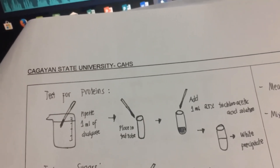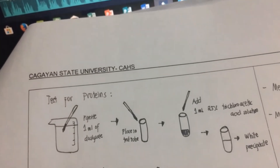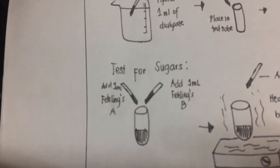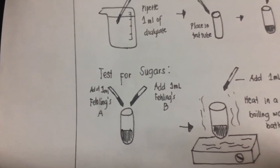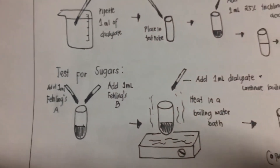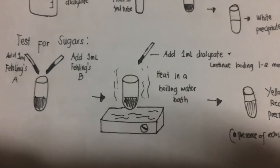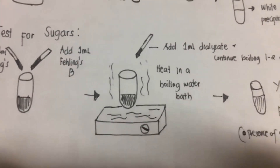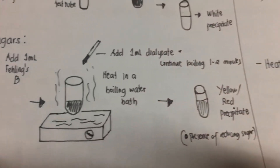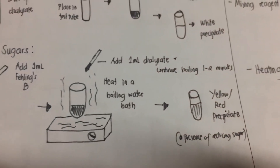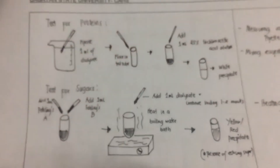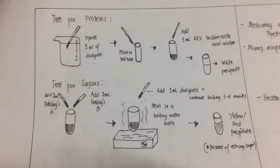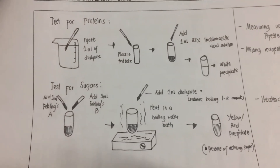Now let us test for sugar. Combine 1 ml of Fehling's A and 1 ml of Fehling's B in a test tube and heat it in a boiling water bath. Add 1 ml of the dialysate and continue to boil for 1–2 minutes. A yellow or red precipitate indicates the presence of sugar.